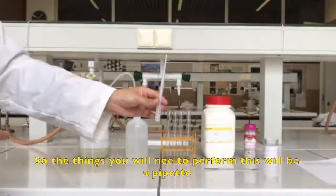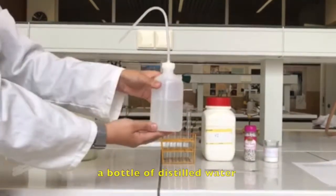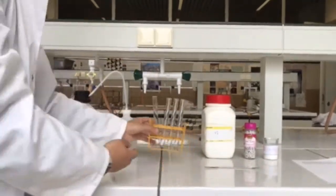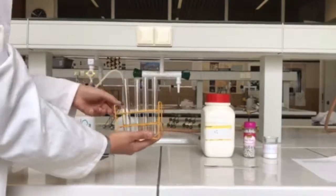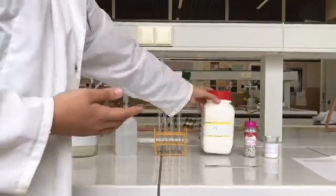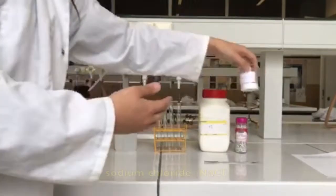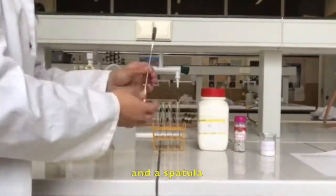So the things you will need to perform this experiment would be a pipette, hydrogen nitrate, a bottle of distilled water, a rack with four test tubes, potassium iodide, silver colored sugar pearls, sodium chloride and a spatula.